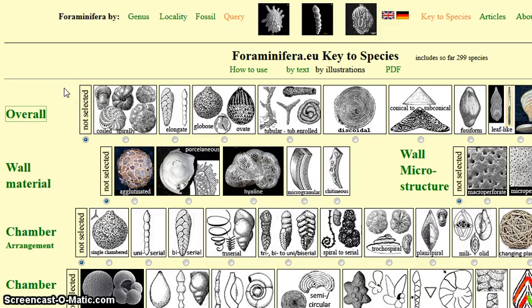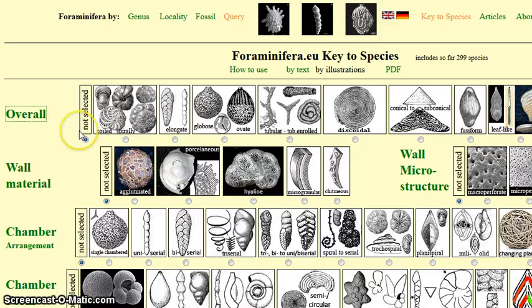You only have to make your choices in three categories to get a good result. First, make yourself familiar with the features in one category. For example, in the first row you find the category 'overall'.